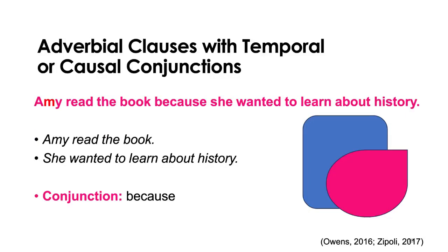The next one is adverbial clauses — sentences with adverbial clauses with temporal or causal conjunctions. Temporal conjunctions would be words like before and after; causal conjunctions would be words like because. Causal conjunctions state some kind of cause-and-effect relationship, and temporal ones say when something happens. You may notice kids tend to struggle with when questions and why questions — a lot of times it's because they're struggling with that temporal or causal vocabulary.